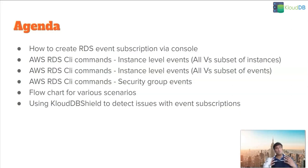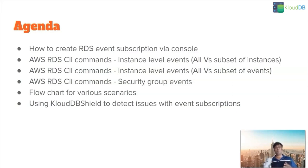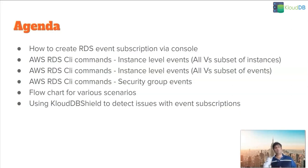How can we create a subscription for all instances versus some instances? How can we create a subscription for a group of events? For example, under instances you have failover, deletion, etc., and you want to create an event subscription for a subset of event categories. How do you create an event subscription for security group events? We'll also showcase a flowchart we've built for these scenarios, and finally we'll see how CloudDB Shield can help in detecting these issues with your RDS instances.